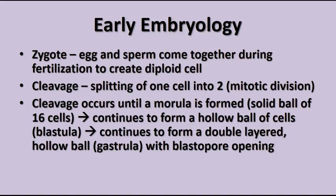Cleavage continues from two cells to four to eight to sixteen and so forth. The morula is a solid ball of 16 cells. As cells continue to increase in number, the cells on the inside begin to lose access to nutrients and a way to get rid of waste. So they migrate toward the outside, forming a hollow ball of cells called a blastula — a single layer of cells with fluid inside and outside so all cells can equally exchange nutrients and waste.